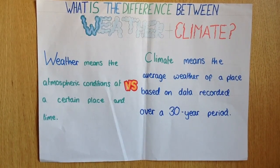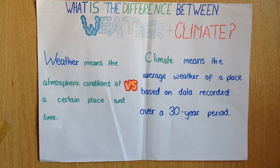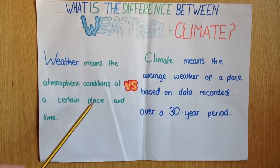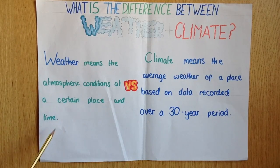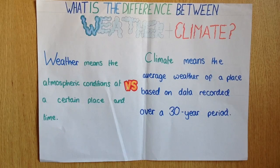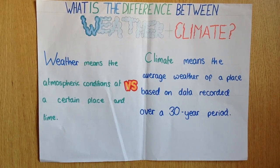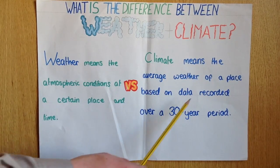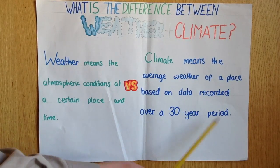Often in exams, a question that comes up is: what is the difference between weather and climate? This is very simple. Weather means the atmospheric conditions at a certain place and time. For example, in Titchfield it is 20 degrees and has a north-west wind. However, climate means the average weather of a place based on data recorded over a 30-year period.